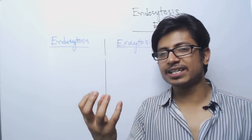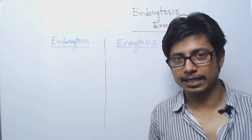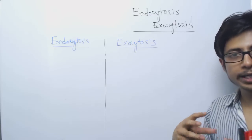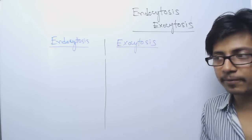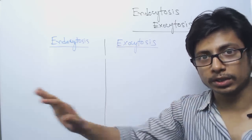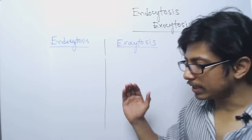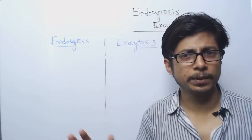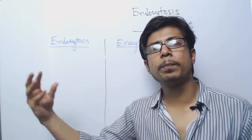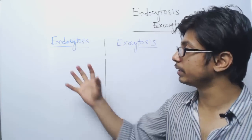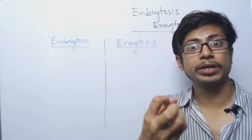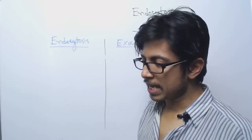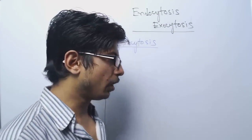In endocytosis, cells slowly take molecules inside the cell into the cytosol. Exocytosis occurs when proteins or other particles generated inside the cell need to go out - the cell puts them outside. Endocytosis is required in multiple cases, such as when a cell needs to engulf food particles. There are different types of endocytosis.